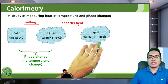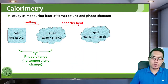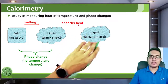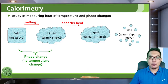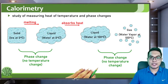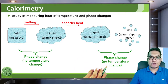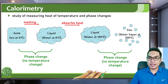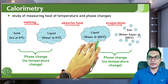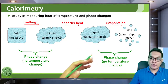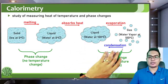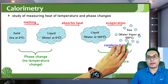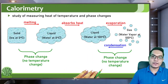Zero degrees Celsius is called the freezing point. For water, 100 degrees Celsius is the boiling point. When water absorbs heat further, it becomes liquid at 100 degrees Celsius, and when it reaches the boiling point it can become water vapor. Again, what happens here is a phase change. Take note that when the phase of a material changes, there is no temperature change, because all of the heat absorbed by the material is used to change its phase.